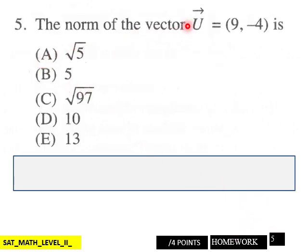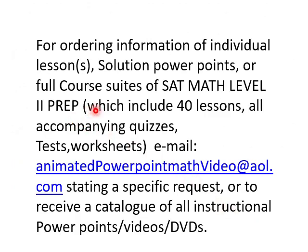The norm of the vector U equals 9, negative 4 is which one of these values here? Four points for page five. And that is your section 20 homework SAT Math Level 2 prep.